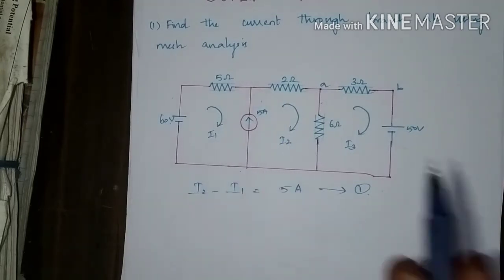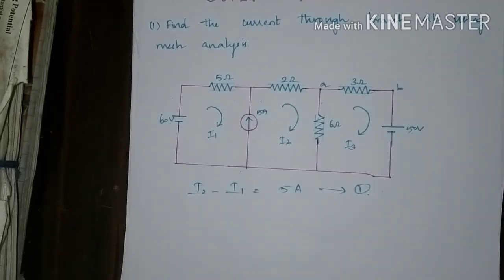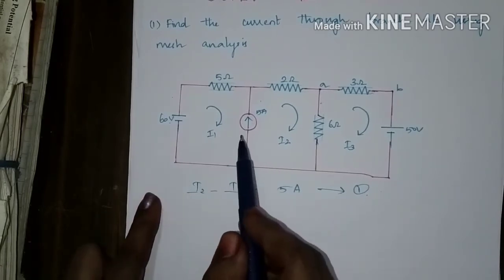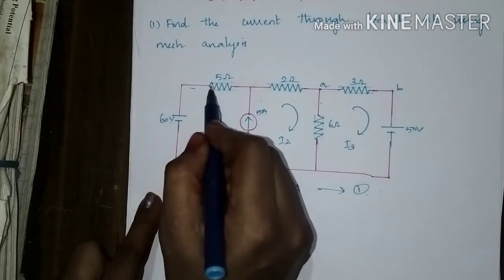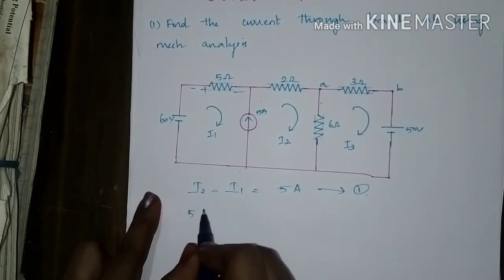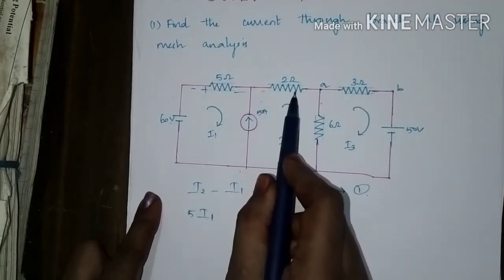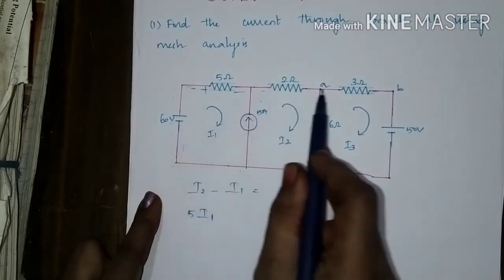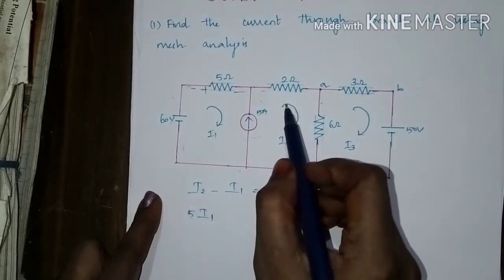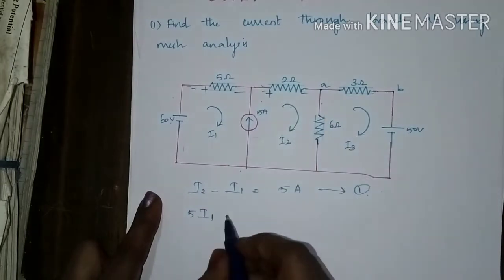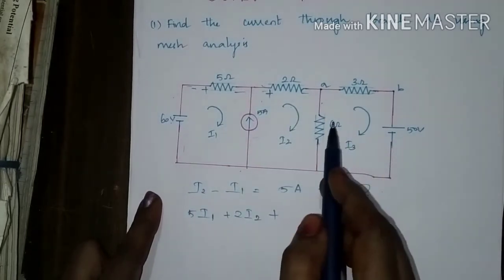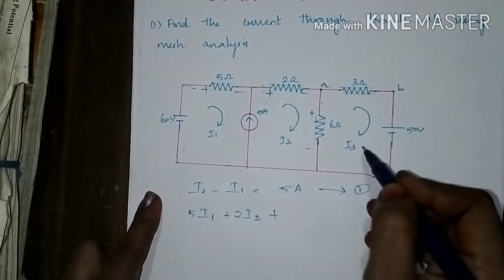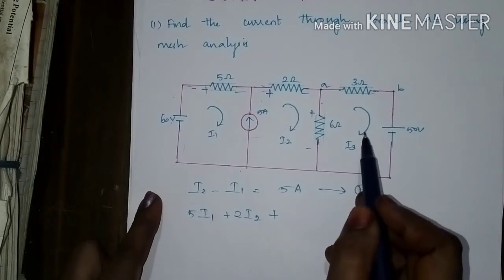After removing the source, we can write the KVL equation for the first and second meshes combined. Assume the current is moving through 5 ohms — it produces a potential drop of 5I1. The I2 current flows through 2 ohms, so we get plus 2I2. The loop goes from the 60-volt source through the 5 ohms, 2 ohms, and 6 ohms. The 6 ohms carries both I2 and I3, where I2 flows from top to bottom and I3 from bottom to top.